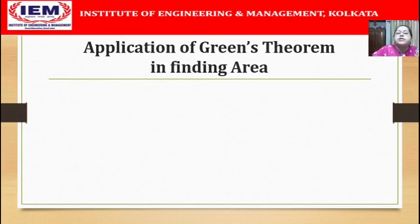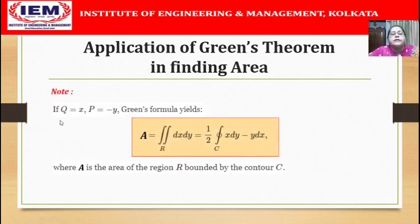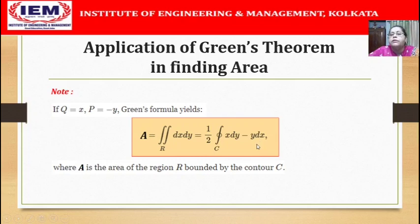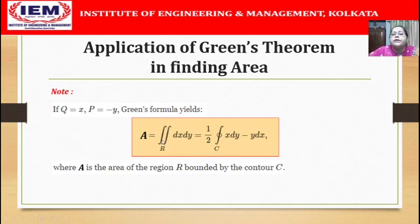Let us see an important application of Green's theorem in finding the area of the region R. If the function Q equals x and the function P equals minus y, then the line integral P dx plus Q dy becomes minus y dx plus x dy. The double integral expression is ∂Q/∂x minus ∂P/∂y: ∂Q/∂x will be 1 and minus ∂P/∂y will also be 1, giving us two times the double integral dx dy. Therefore, the double integral dx dy over R equals half the line integral of x dy minus y dx along the contour C.